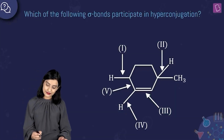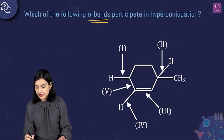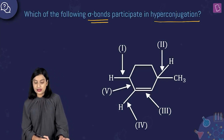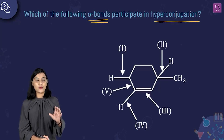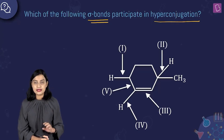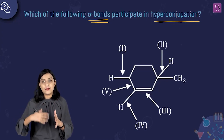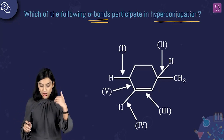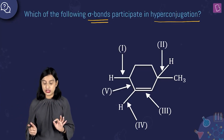So three greater than two greater than one is shown in option C, and option C is the right answer to this question. Now here they're asking: which of the following sigma bonds can participate in hyperconjugation? Hyperconjugation is called no bond resonance, and the key idea is: which sigma bond participates? It is the sigma bond between the alpha carbon and its respective hydrogen.